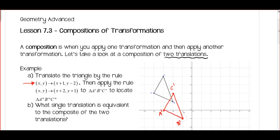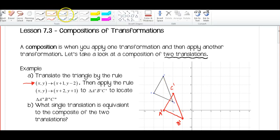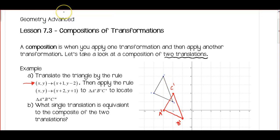I'm just going to connect the vertices to get the triangle. We can see that it's been translated — the whole thing is right 1 and down 2 units. Now I'm going to take my new triangle and apply the second transformation so that I have a composition of translations.